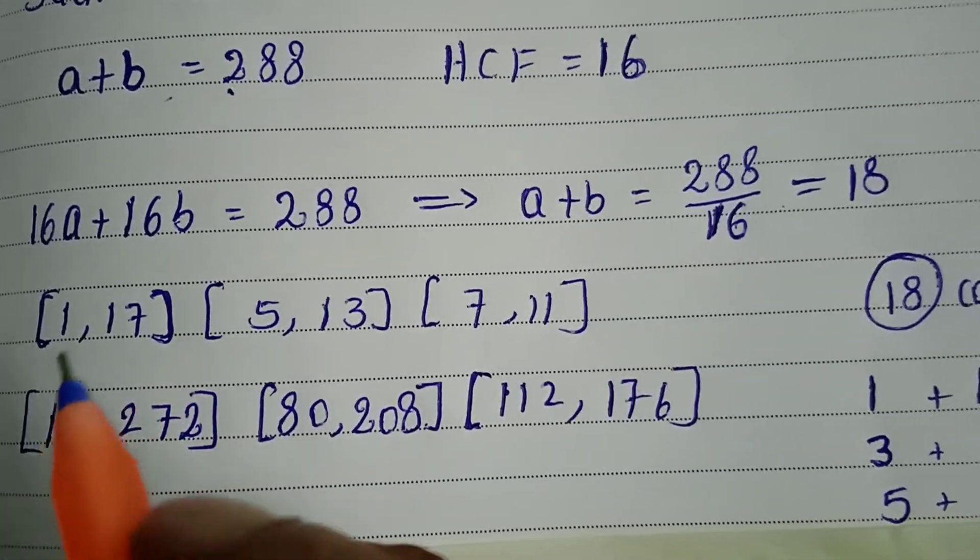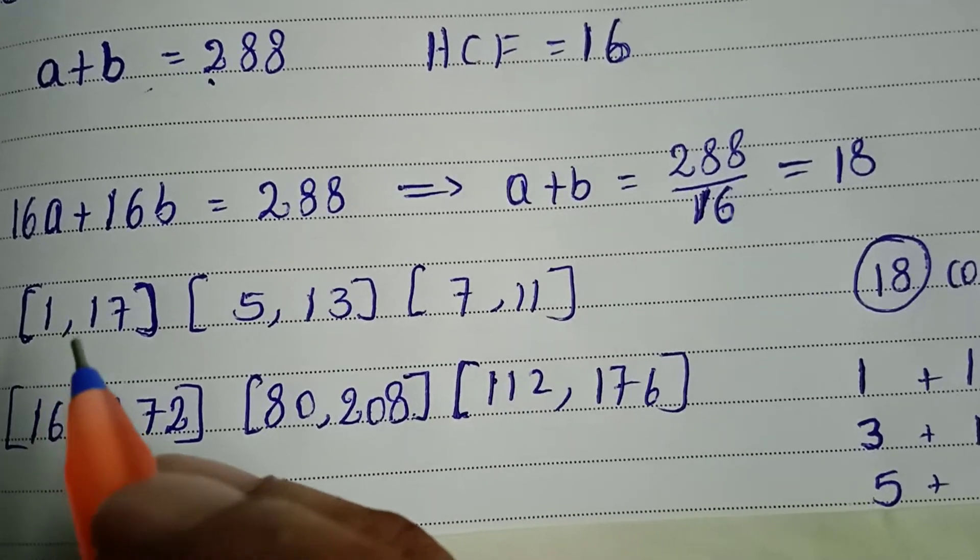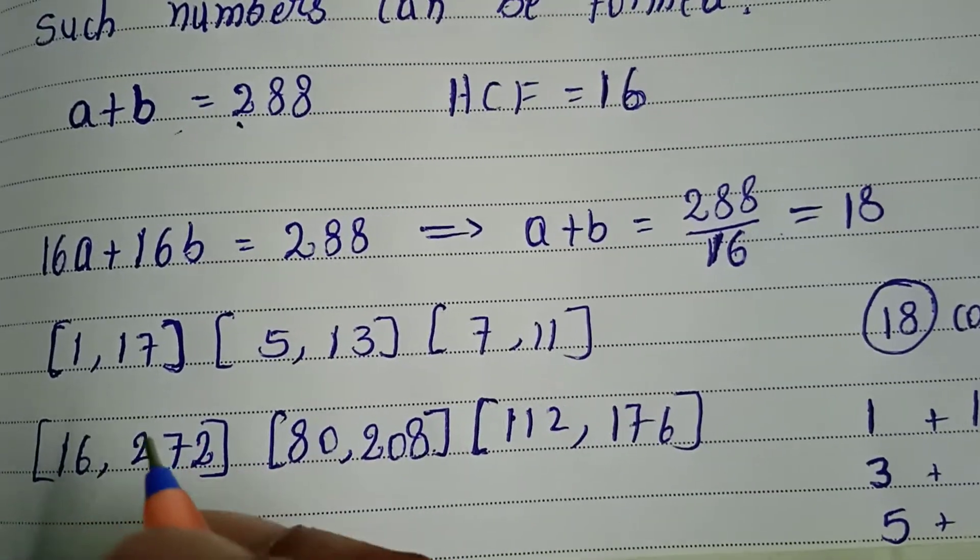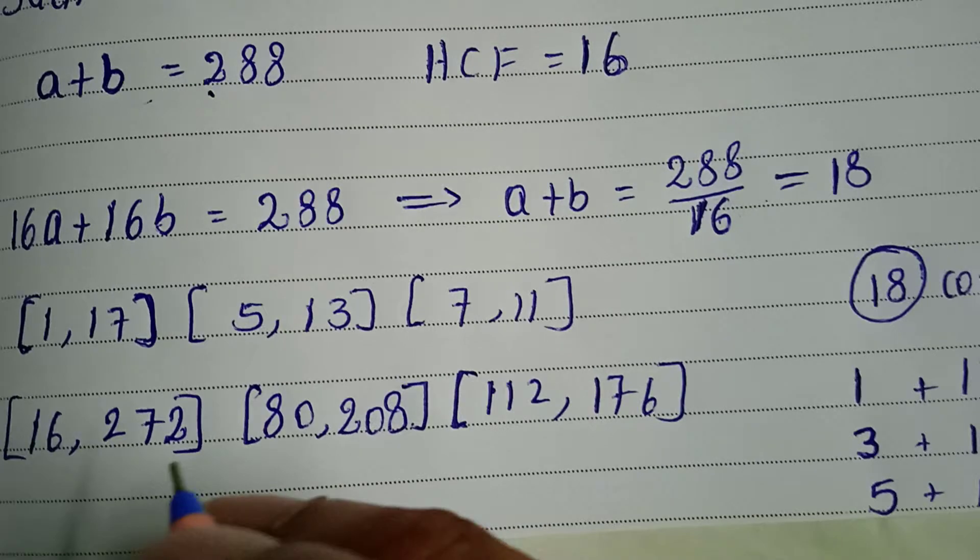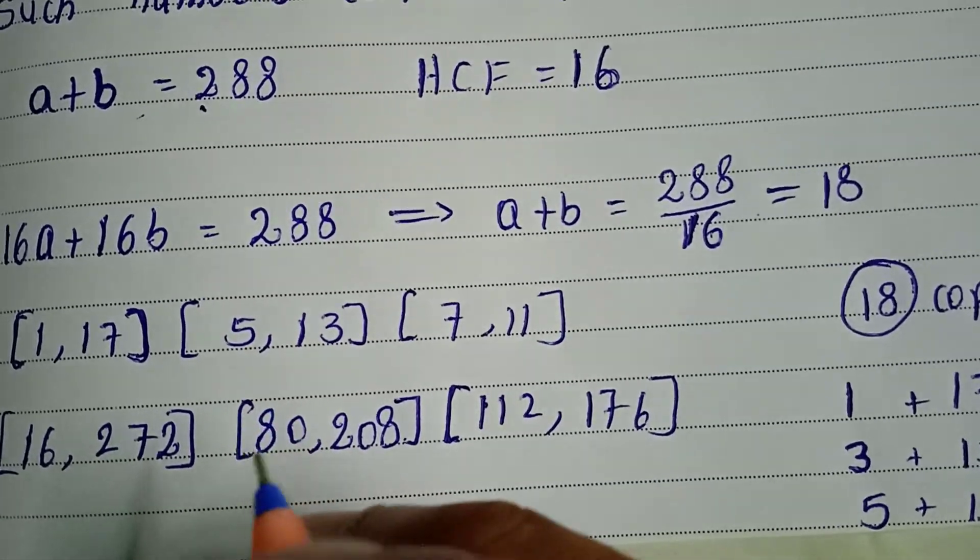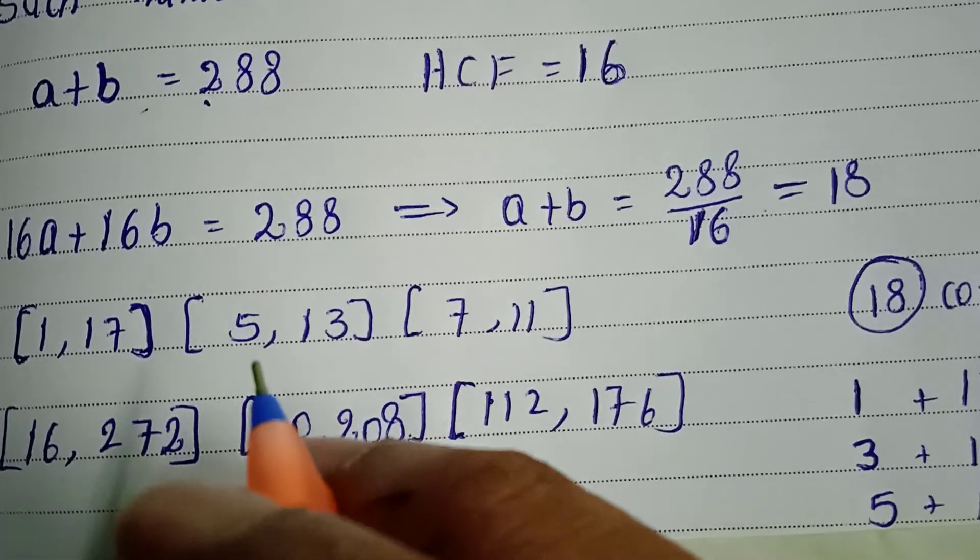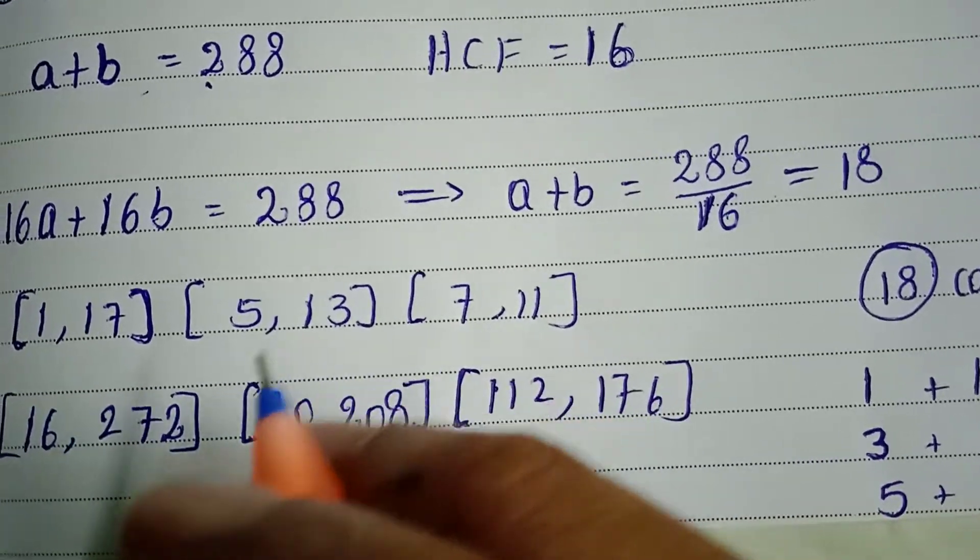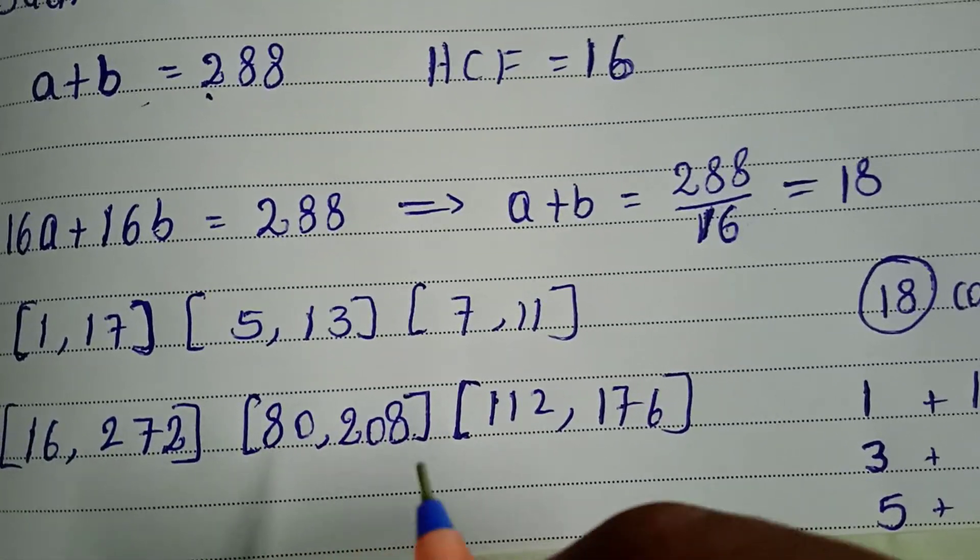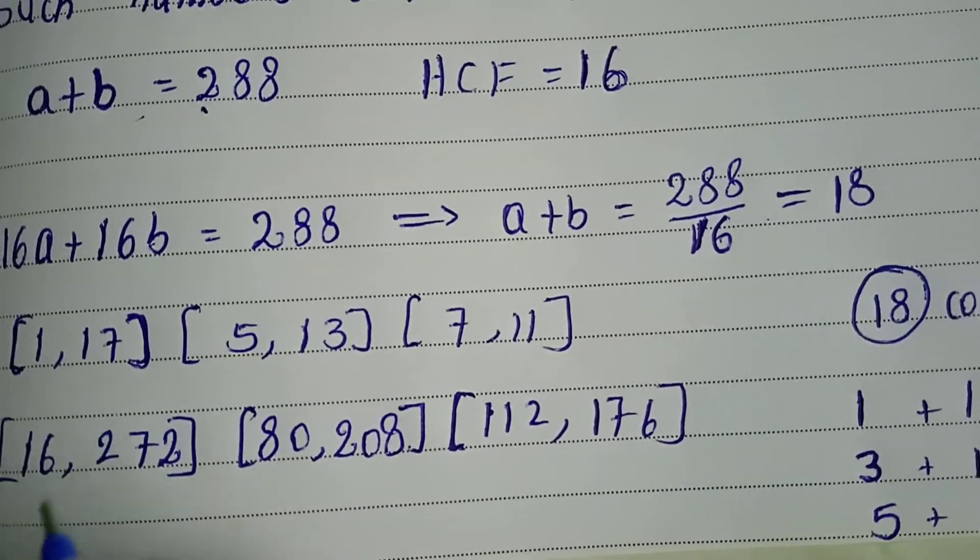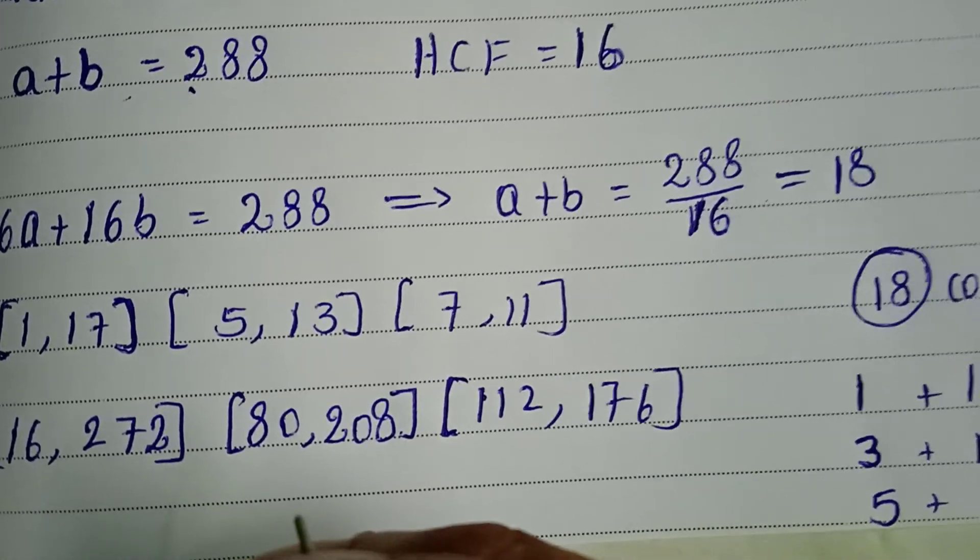Now we multiply 16 into these numbers. 16 times 1 is 16, and 16 times 17 is 272. This is one pair. Similarly, we multiply 16 by each number to get the three actual pairs.